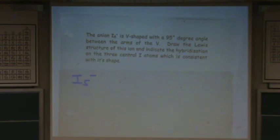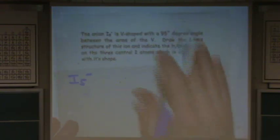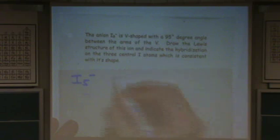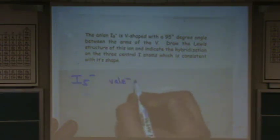All this for I5. Yeah, this would be like a full question. We'd ask you all this stuff. Okay, so I5 minus. First step, valence electrons. If you didn't know that, know it. Valence electrons is first.